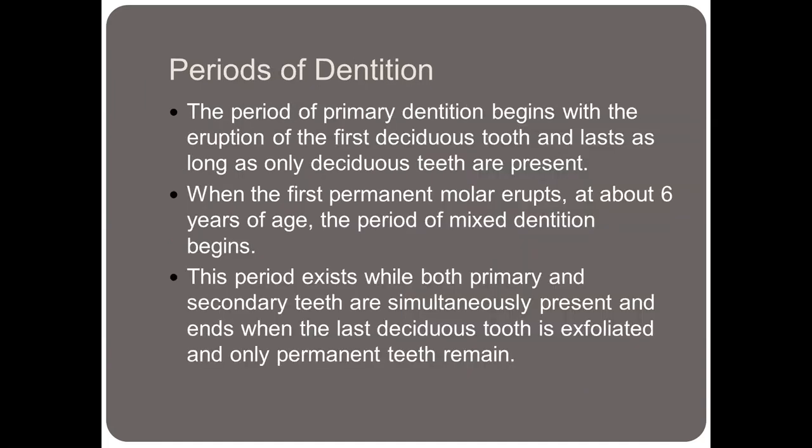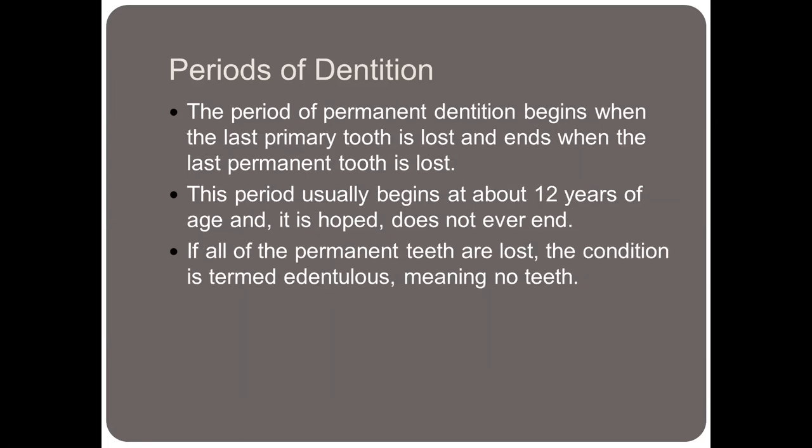The period of primary dentition begins with the eruption of the first deciduous tooth and lasts as long as only deciduous teeth are present. When the first permanent molar erupts at about six years of age, the period of mixed dentition begins. This period exists while both primary and permanent teeth are simultaneously present and ends when the last deciduous tooth is exfoliated. If an adult has a retained deciduous tooth because they did not have a permanent tooth, they are in a forever state of mixed dentition. The period of permanent dentition begins when the last primary tooth is lost and ends when the last permanent tooth is lost, usually beginning at about 12 years of age.